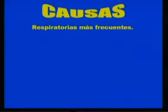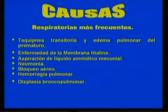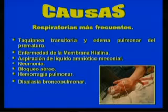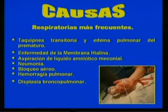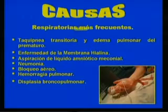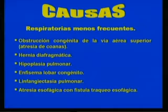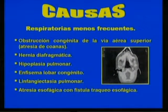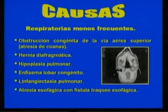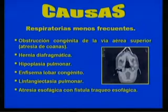Among the causes of this neonatal condition, we find three large groups. The most frequent respiratory etiologies include transient tachypnea, pulmonary edema of the premature, hyaline membrane disease, meconial amniotic fluid aspiration, pneumonia, air block, pulmonary hemorrhage, and bronchopulmonary dysplasia. Less frequent respiratory causes include congenital obstruction of the upper airway, choanal atresia, diaphragmatic hernia, pulmonary hypoplasia, congenital lobar emphysema, pulmonary lymphangiectasia, and esophageal atresia with tracheoesophageal fistula.